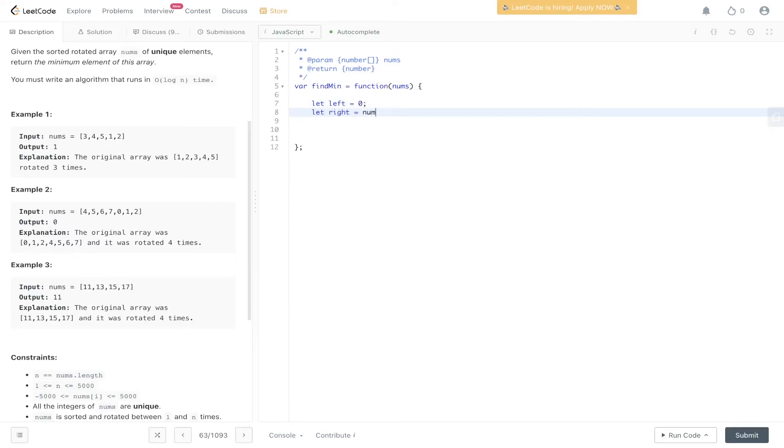Right equals nums.length minus one. While left is less than right, we grab the middle value: mid equals Math.floor((right plus left) divided by two). Now we say: if nums[right] is less than nums[mid].